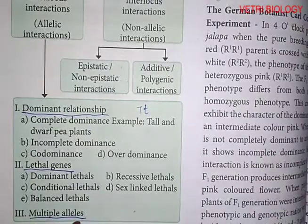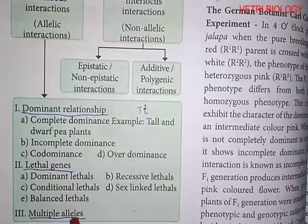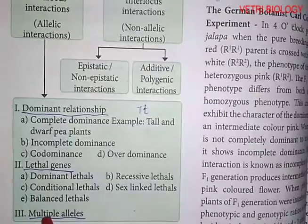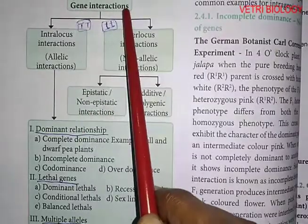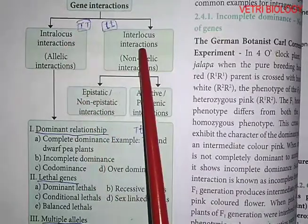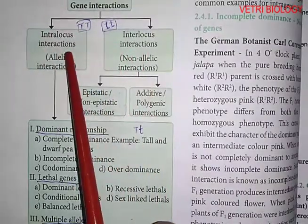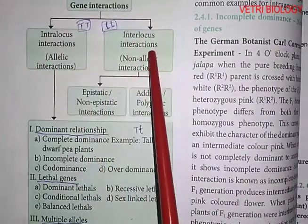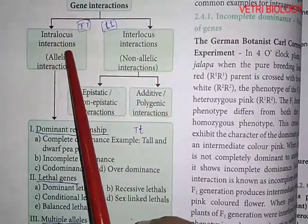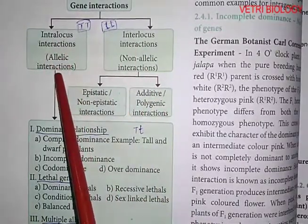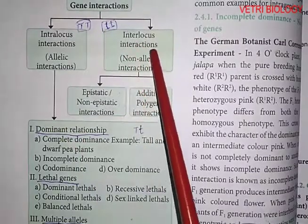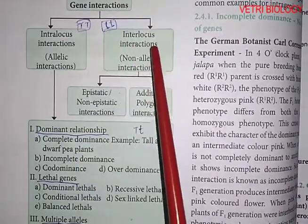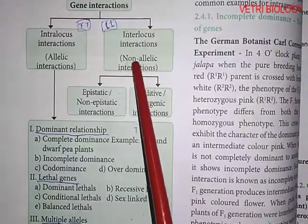Multiple alleles: one gene has more than two alleles, so it is called multiple alleles. Gene interactions occur in two ways: intralocus interactions and interlocus interactions. Intralocus interaction is also called allelic interaction; it occurs between alleles. Interlocus interactions occur between two genes, so they are called non-allelic interactions.